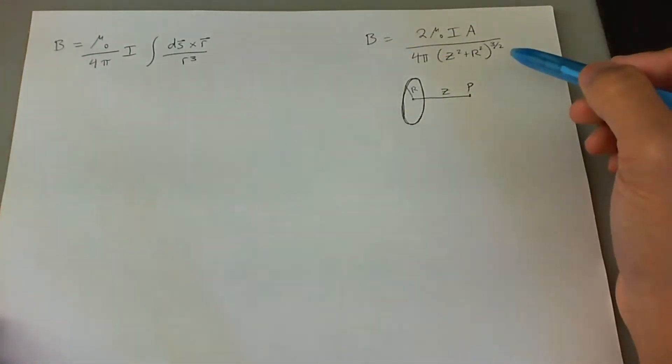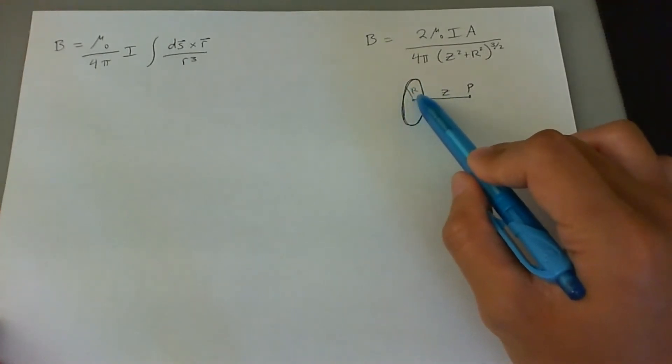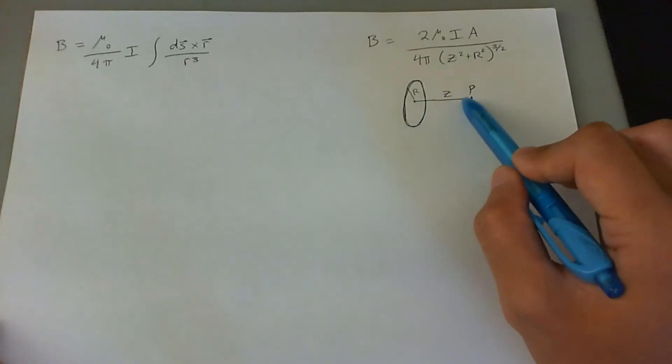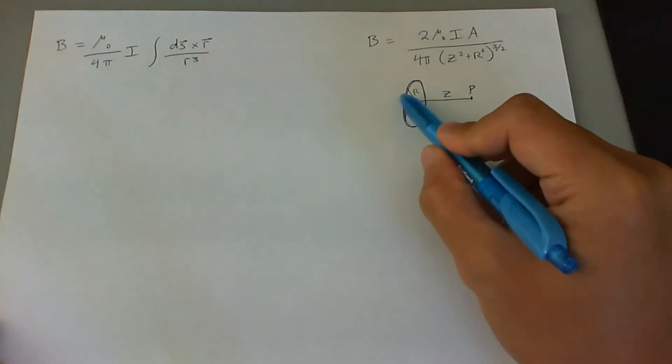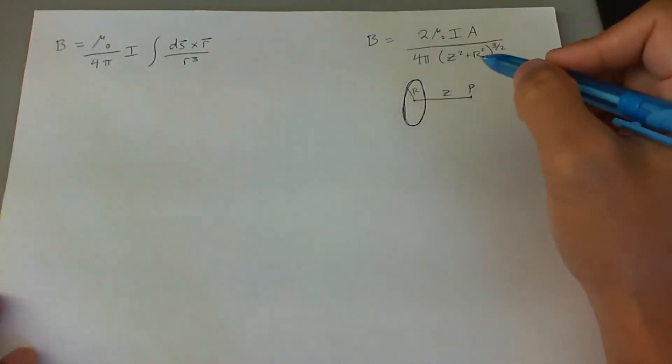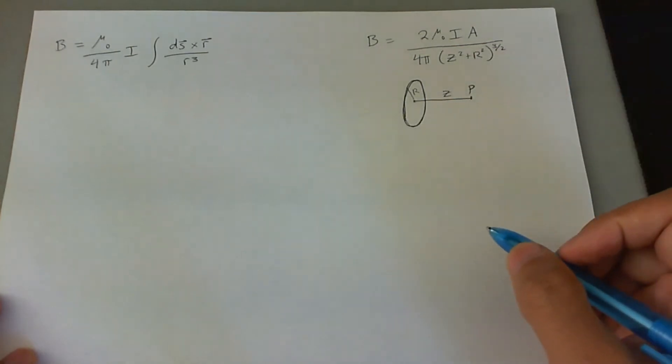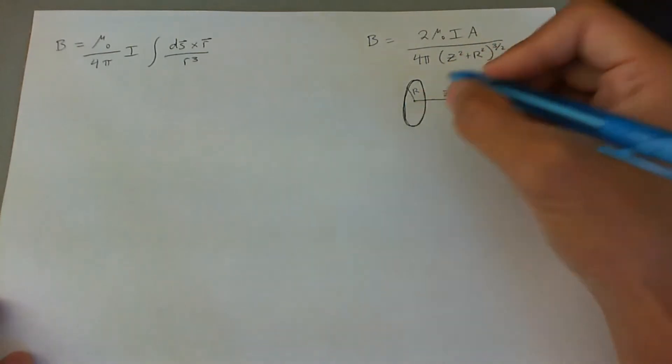The first way of solving it is by using the equation that we've already derived for a full circle of charge and a point z away from the center of the circle with a radius r. Whatever z is, wherever p is in terms of the z axis, the B field will get lower. In this case, the p is right in the center of the circle, but there's only one fourth of it that's actually creating a B field that's influencing p.